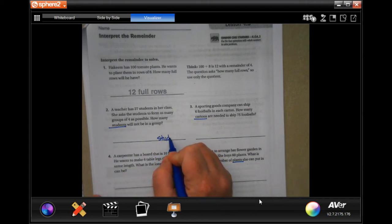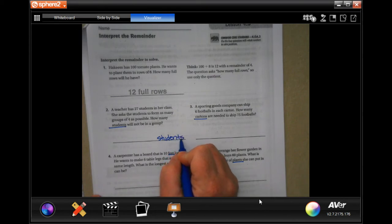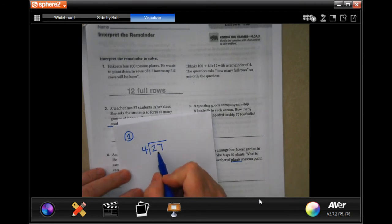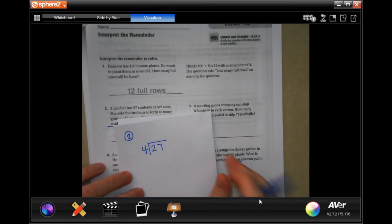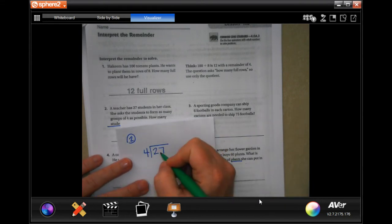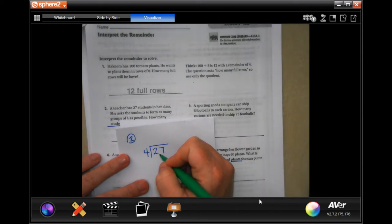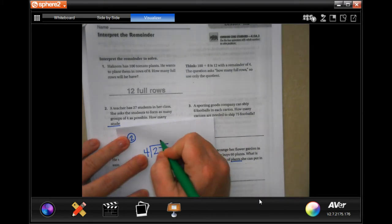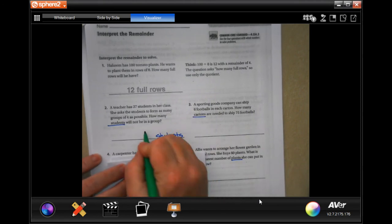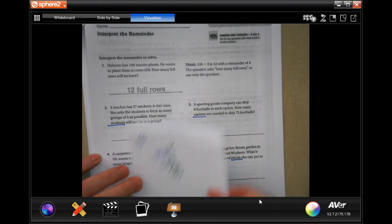Okay, so 27 kids into groups of 4. So 4 times 5 is 20, 4 times 6 is 24, 4 times 7 is 28. That's too big. So we're going to go with 6. We're going to do the subtraction and get 3. So 3 students will not be in a group. It's asking for the remainder.